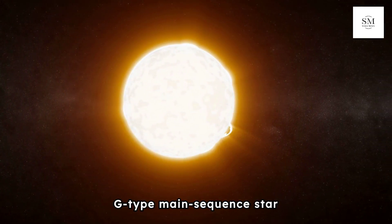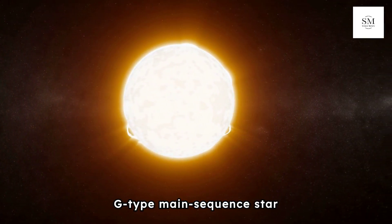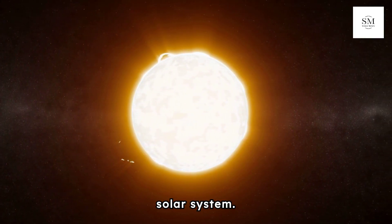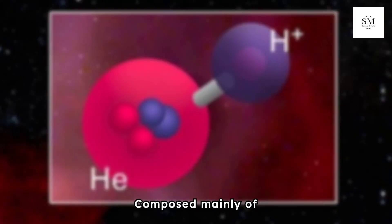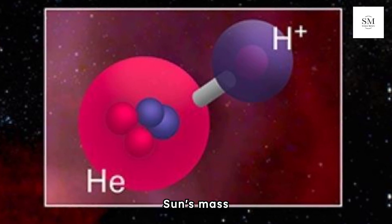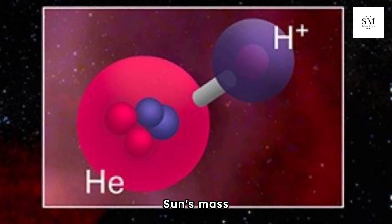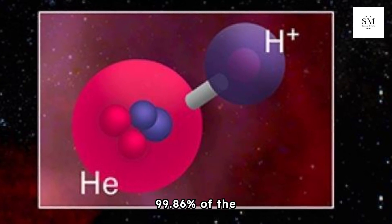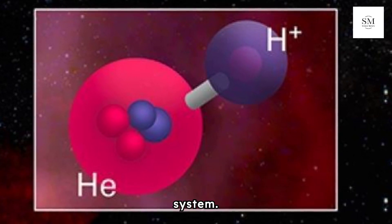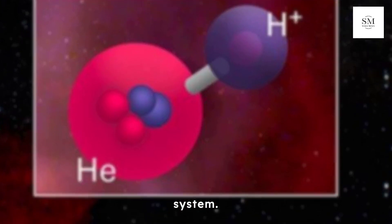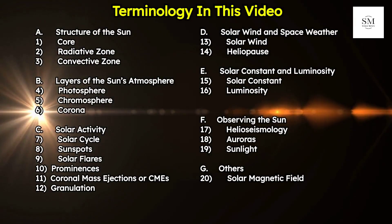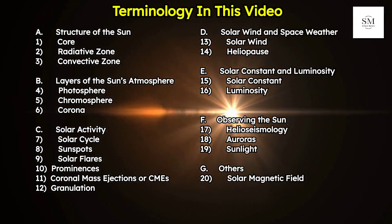The Sun is a G-type main-sequence star located at the center of our solar system. Composed mainly of hydrogen and helium, the Sun's mass constitutes about 99.86% of the total mass of the solar system. Today we are delving deep into the Sun and its associated terminologies in detail.